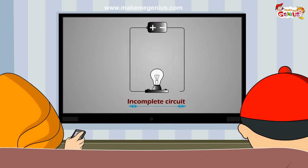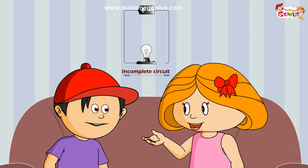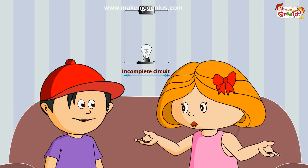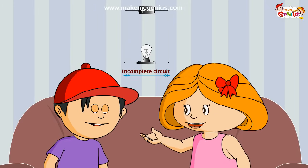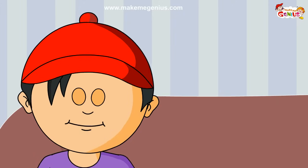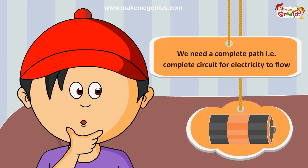Now look at this second circuit. What is missing? The circuit is not complete. Correct. This is an incomplete circuit. You need a complete path for the current to flow in — this is called an electric circuit. So you need some power source like a cell or a battery, and you need a full circuit for electric charge to flow.